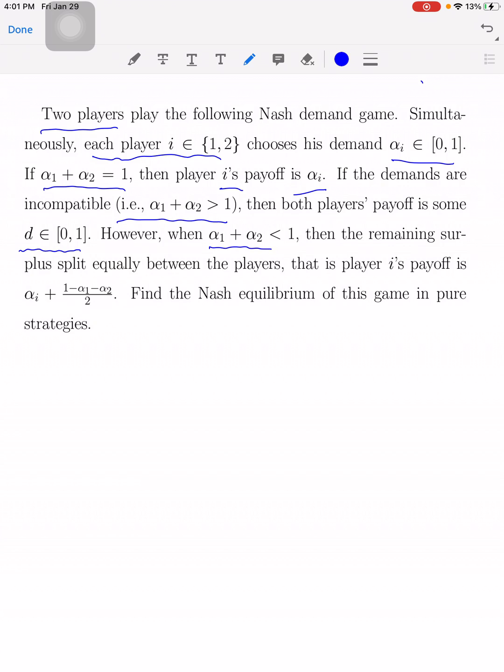However, if alpha 1 plus alpha 2 is less than 1, then the remaining surplus, which is 1 minus alpha 1 minus alpha 2, will be split equally between the two players. That means player i's payoff is going to be alpha i plus half of the remaining surplus.